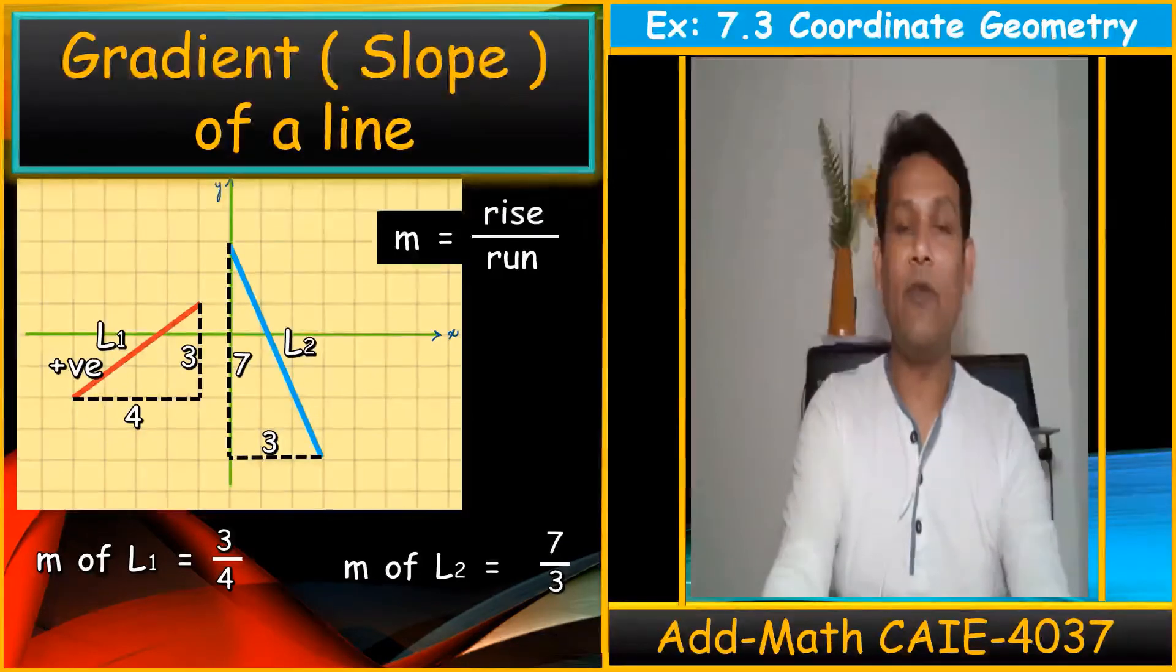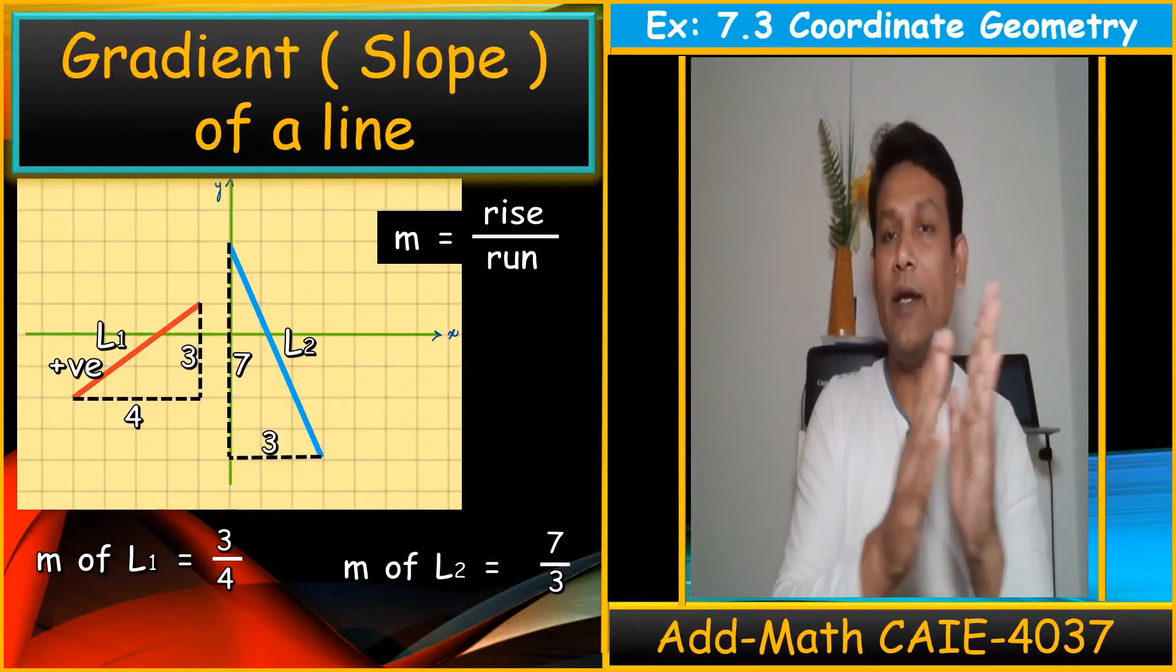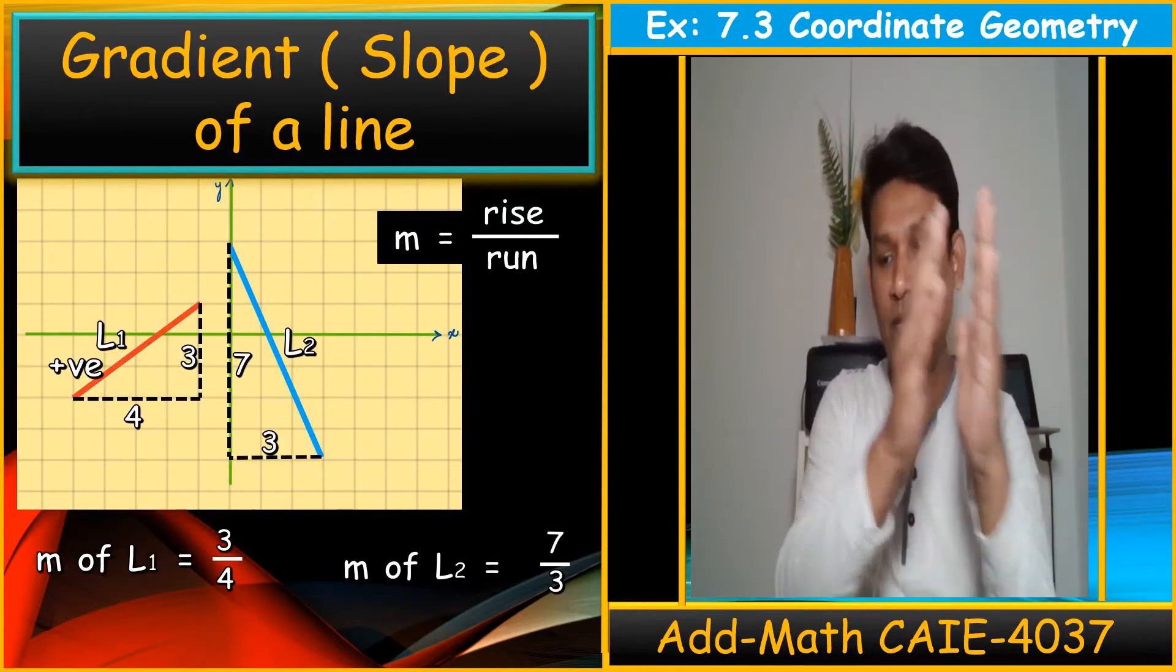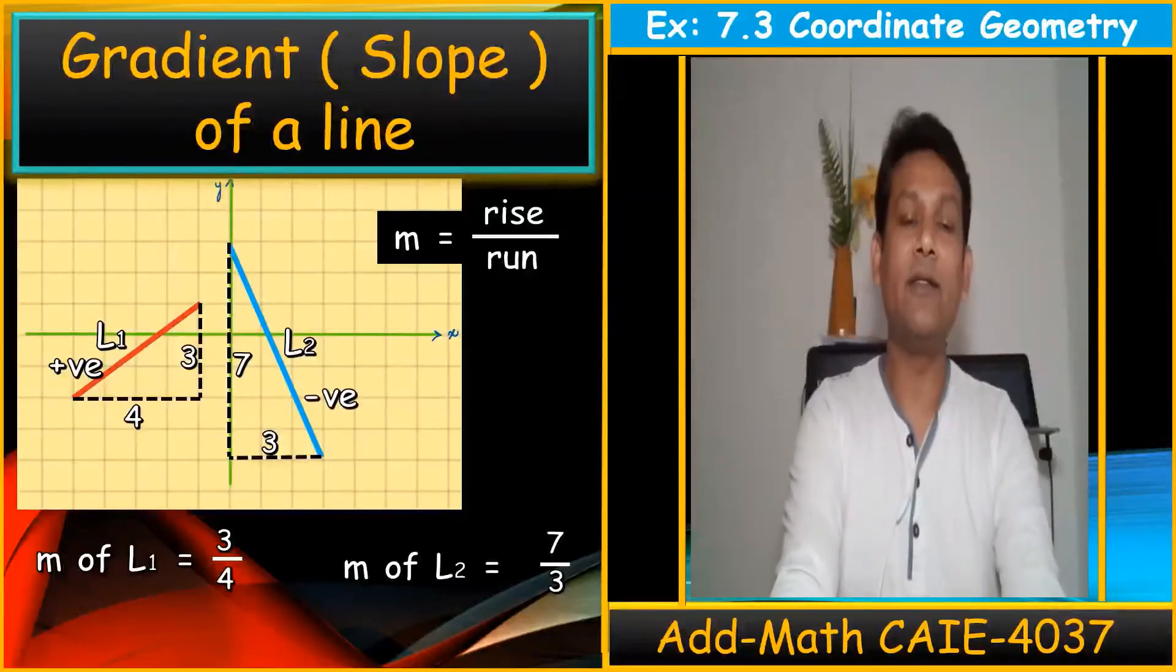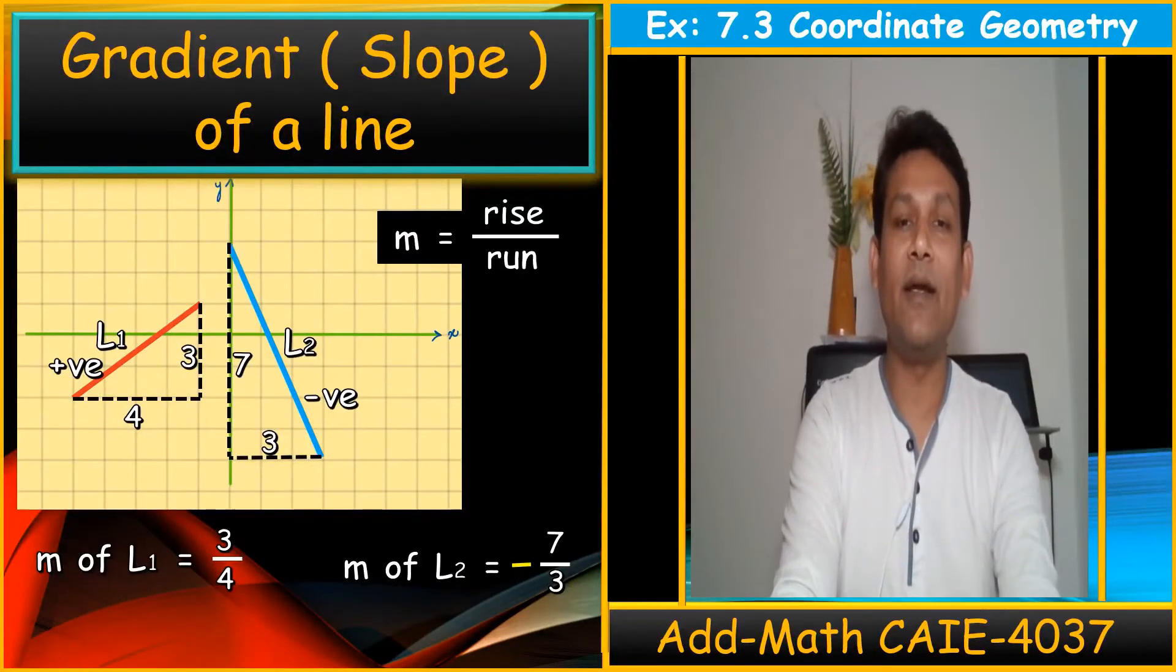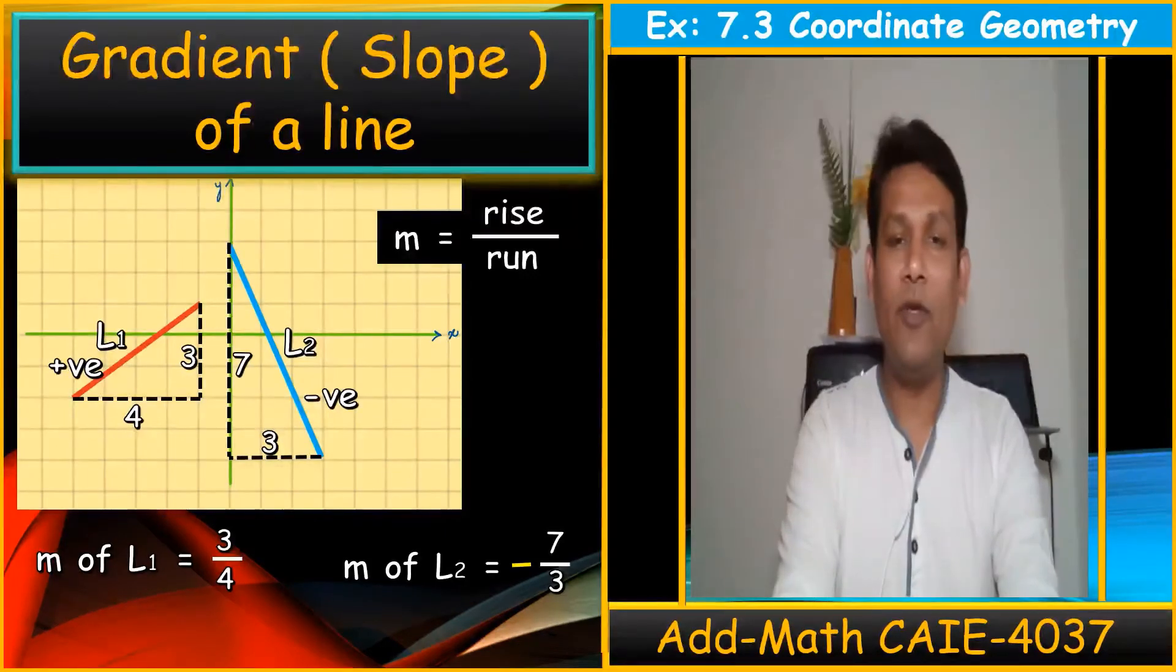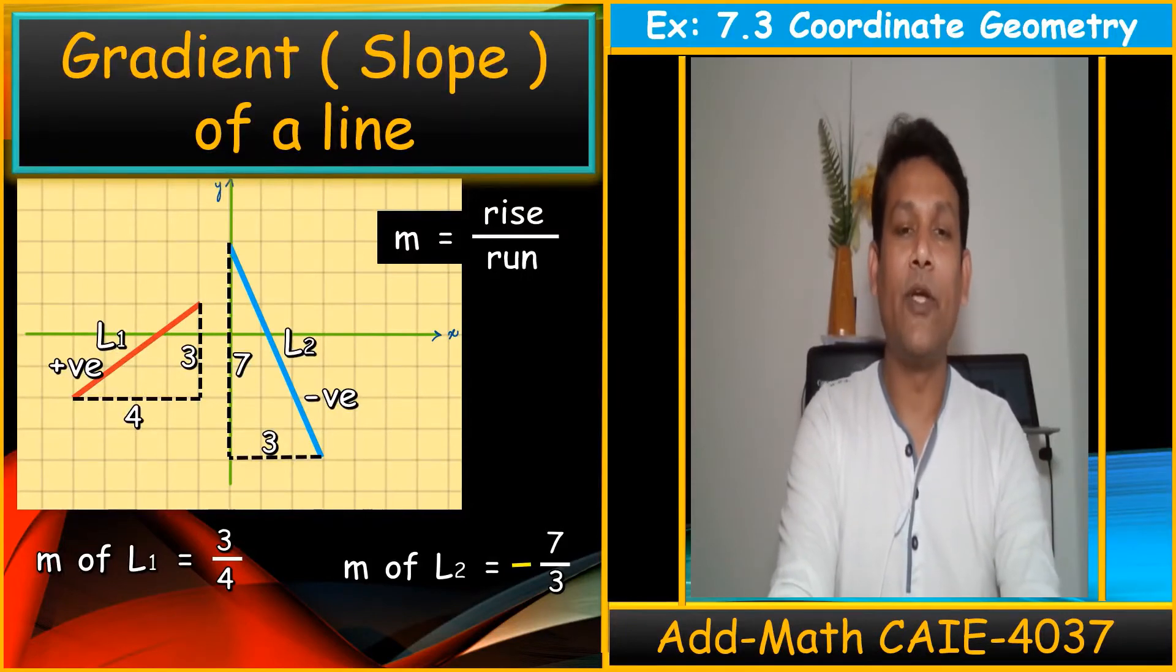But when we move from left to right and moving up is positive. When we move from left to right, moving down is negative. So this line has a negative gradient. So this negative gradient means 7 upon 3 is a negative gradient. Just remember, we use this frequently in add maths also. Move to the next one.